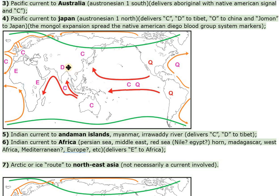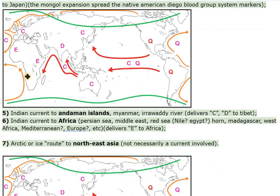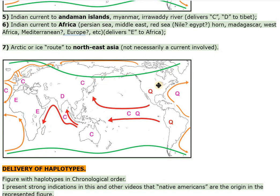Route 6: the Indian Current to Africa, the Persian Sea, Middle East, Red Sea, Nile, Egypt, Horn of Africa, Madagascar, West Africa, Mediterranean, and Europe delivers haplogroup E to Africa. Route 7: the Arctic or Ice Route to Northeast Asia — not necessarily involving a current — also involved in the delivery of haplotypes.